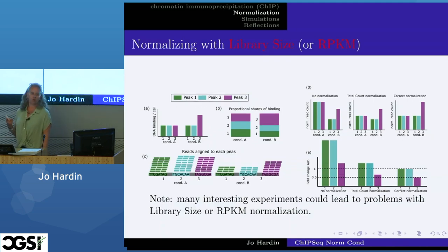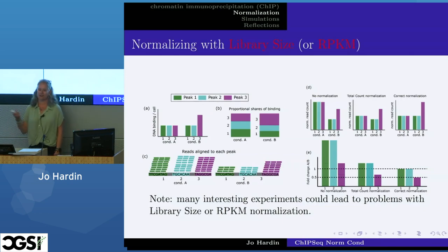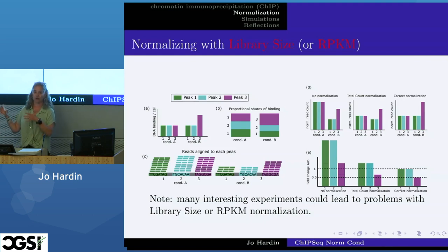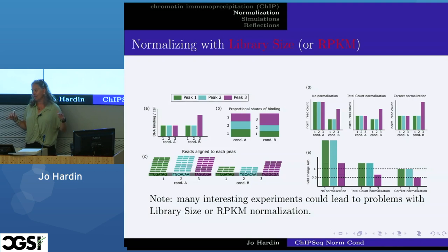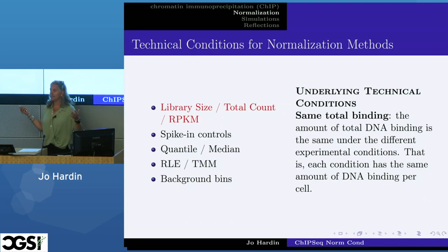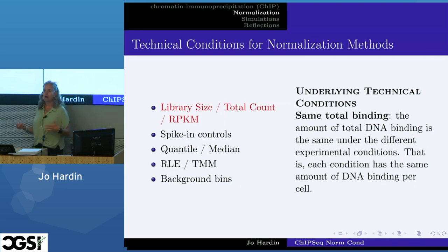We're factoring to get apples-to-apples comparisons so that when we do differential binding, we're comparing the right number of reads across conditions. It's not unreasonable to think there could be more DNA binding in one of your experimental conditions. Only if we have the same amount of DNA protein binding across both experiments overall would it make sense to do a library size, total count, or RPKM normalization. We have to believe the total overall amount of DNA binding is the same across the two experimental conditions.